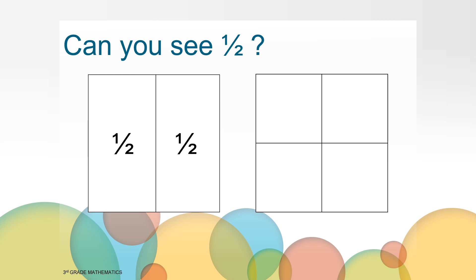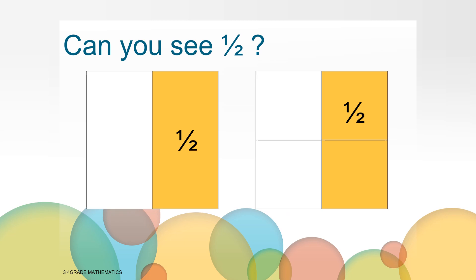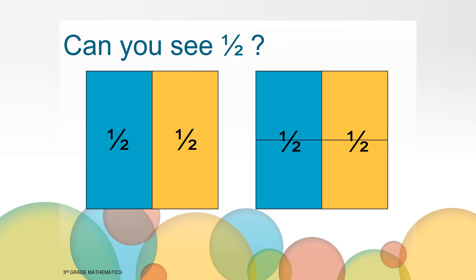You may have still had the last image in your head and used that to help you. We can still see one half on the left side of the rectangle like this. You may have also seen one half on the right side of the rectangle. Since we can see that our rectangle is split in half vertically like this, we can see one half on the left and one half on the right of the center line.